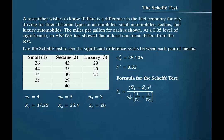For instance, if we begin by comparing the small cars to the sedans, the numerator will be x̄₁ minus x̄₂ squared and the denominator will be the within-group variance times 1 over n₁ plus 1 over n₂. So we have 37.25 minus 35.4 with that quantity squared divided by 25.106 times 1 over 4 plus 1 over 5.